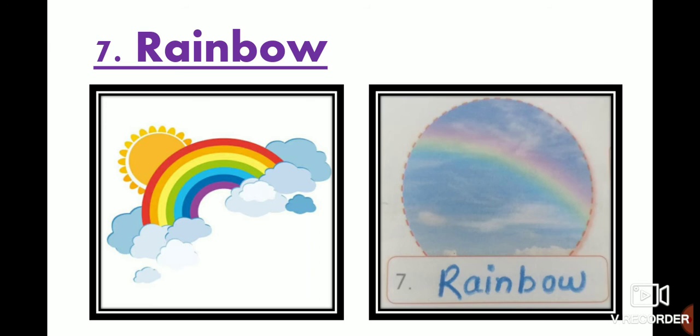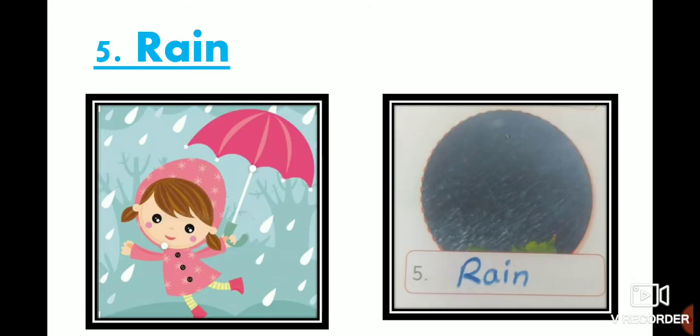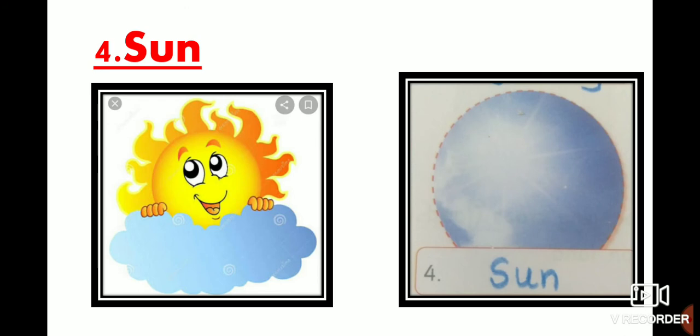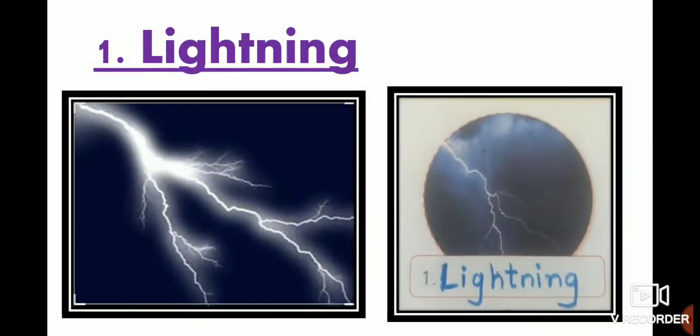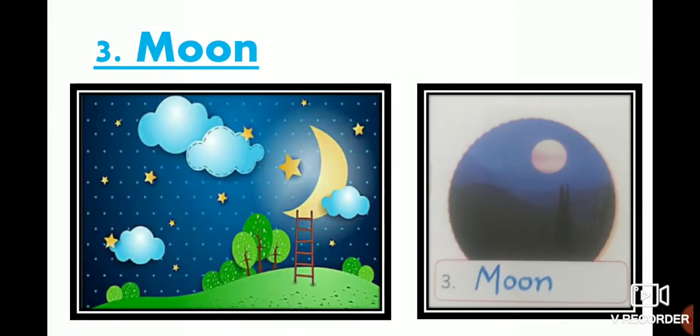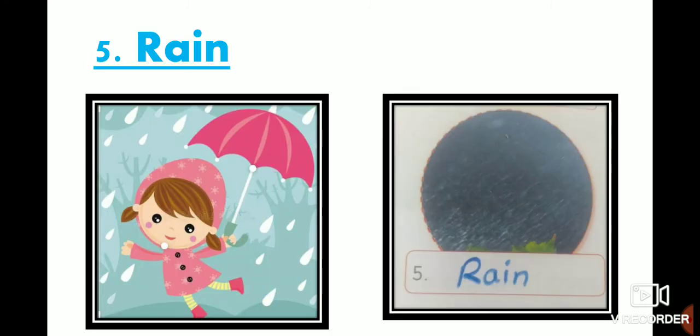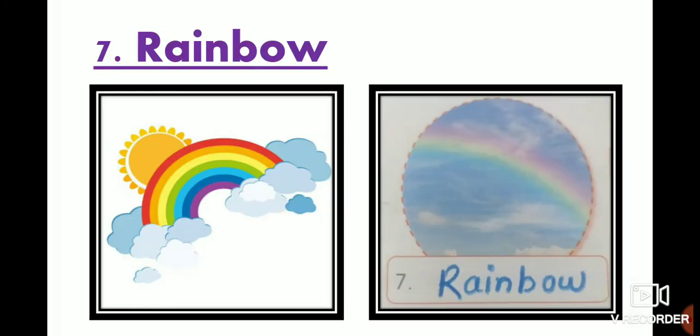So what all did we study, children? Come on, let's quickly revise: Rainbow, Stars, Rain, Sun, Moon, Clouds, and Lightning. So these are different things in the sky, right? I'll repeat again: Lightning, Clouds, Moon, Sun, Rain, Stars, and Rainbow.